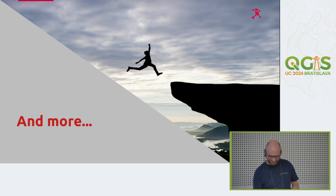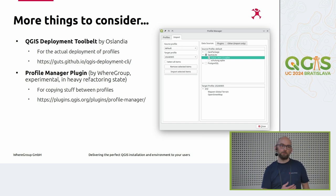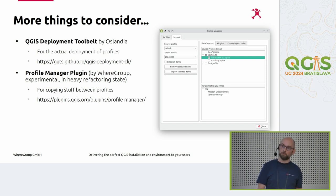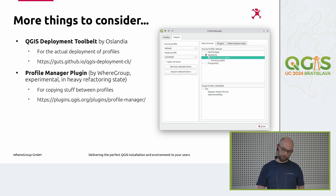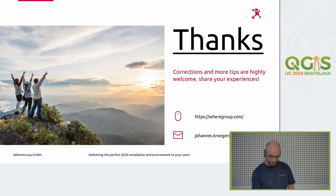There's also some more tooling: the QGIS Deployment Tool Belt from Icelandia is a new project that looks very handy. What I showed are the opportunities to influence QGIS; what this tool does is the actual deployment process - you write rules for how profiles should be created and where they should be deployed. The Profile Manager plugin allows you to migrate stuff between profiles, like copying data sources. It's experimental and I'll try to fix it on Wednesday. So stay tuned, check out those resources, and thanks for your attention.